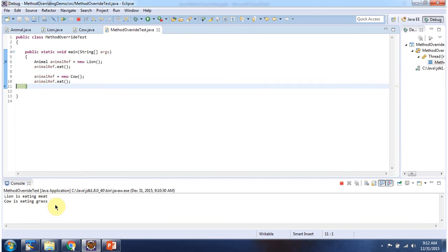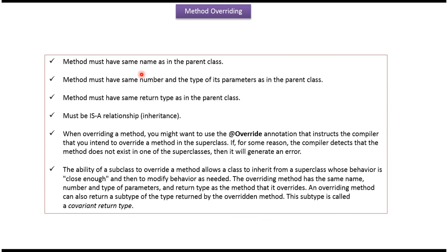Here you can see the output. Here you can see some of the important points related to method overriding: the method must have the same name as in the parent class, and the method must have the same number and type of parameters as in the parent class.